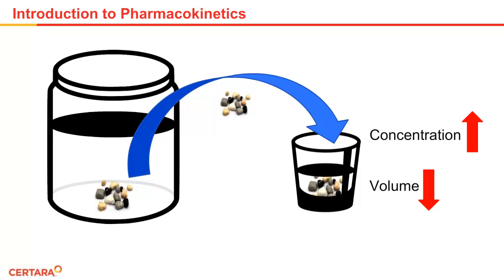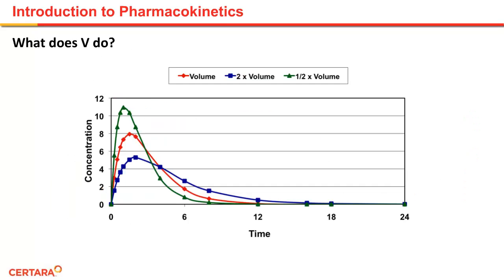Conversely, if you decrease the volume but keep the same number of pebbles, let's say by pouring the pebbles into a shot glass, then the number of pebbles per milliliter of water would be much higher. As you can see in the green line, decreasing the volume of distribution increases the concentration.